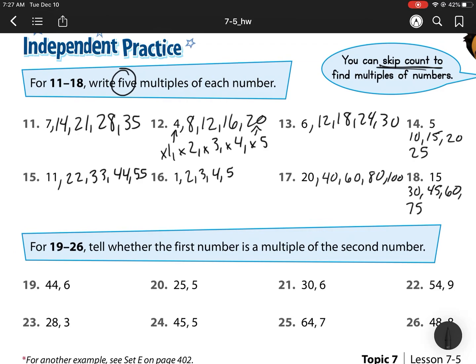For 19 and 26, tell whether the first number is a multiple of the second number. So, counting by 6, can I get to 44? Well, I have 6, 12, 18, 24, 30, 36, 42, 48. So, this one is a no because I don't end up at that 44.